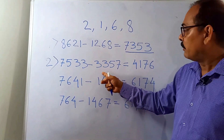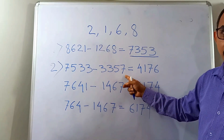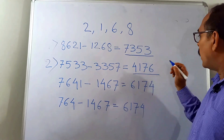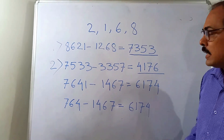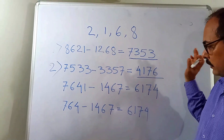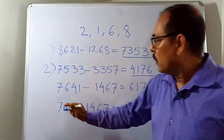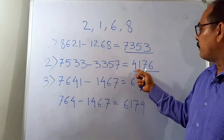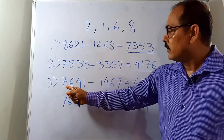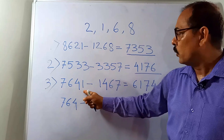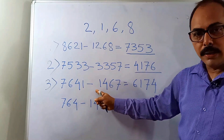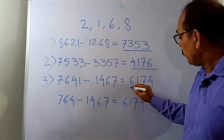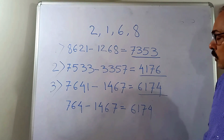We subtract the smallest number 3357 from 7533, and the result is 4176. Now with the digits of this result we go to the third step. The largest number is 7641 minus the smallest 1467, and the result comes to 6174.